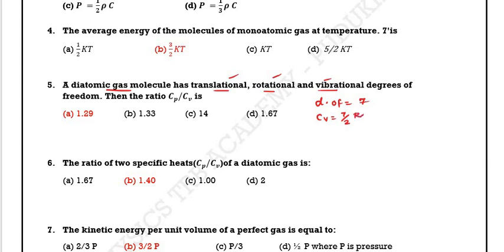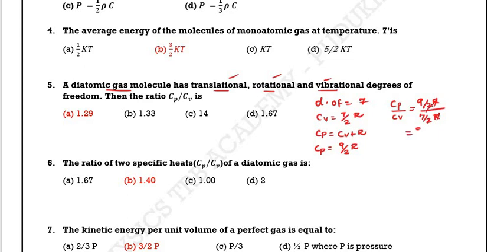With DOF equal to 7, cv equals 7/2 R. Therefore cp equals cv plus R, which gives cp equals 7/2 R plus R equals 9/2 R. Therefore cp by cv equals (9/2 R) divided by (7/2 R), the R and 2 cancel, giving 9/7, which equals approximately 1.29.